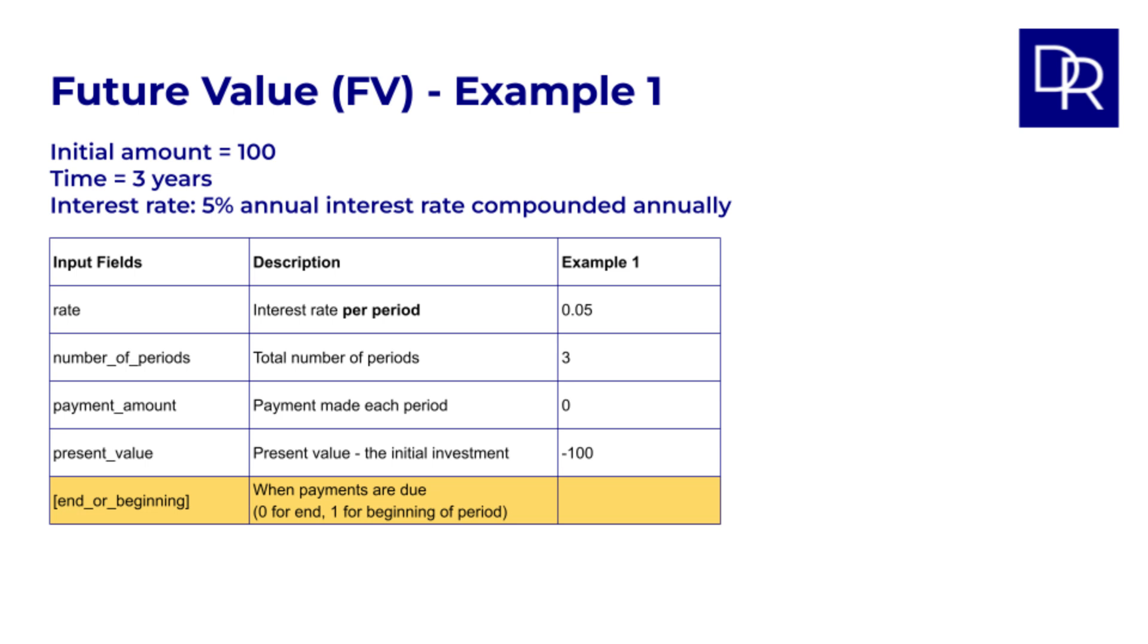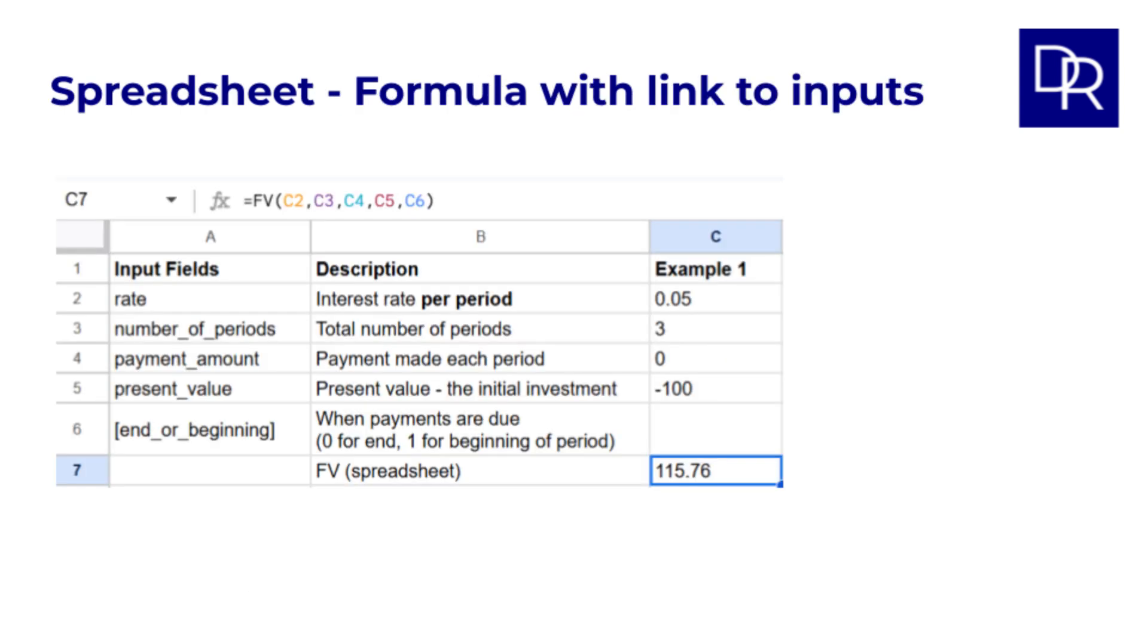Now we have all the inputs we need, so we can calculate the FV. So in the spreadsheet we do equals FV and then the inputs in the right order, 0.05, 3, 0, negative 100. And this gives us 115.76. In the spreadsheet I have linked to the cells with the values so you can change any of them and see the impacts if you like.